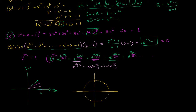Where we left off in the last video, we were beginning to try to figure out what the 24 roots of 1 were. We're going to square those 24 roots, take the absolute value of their imaginary part, and then sum them up. So let's just think about the roots that matter.